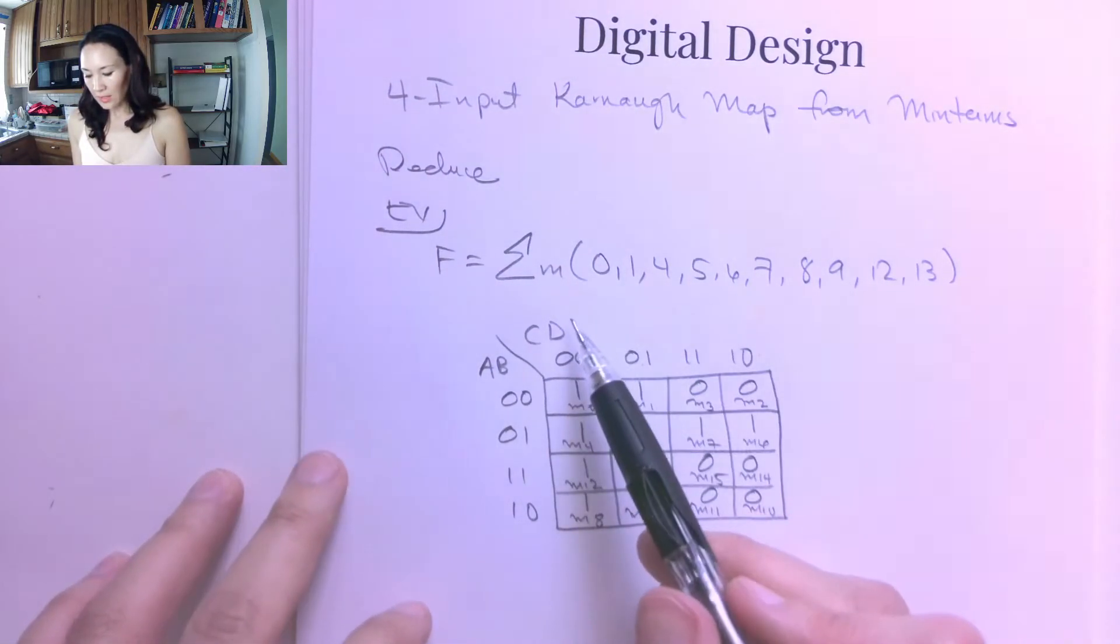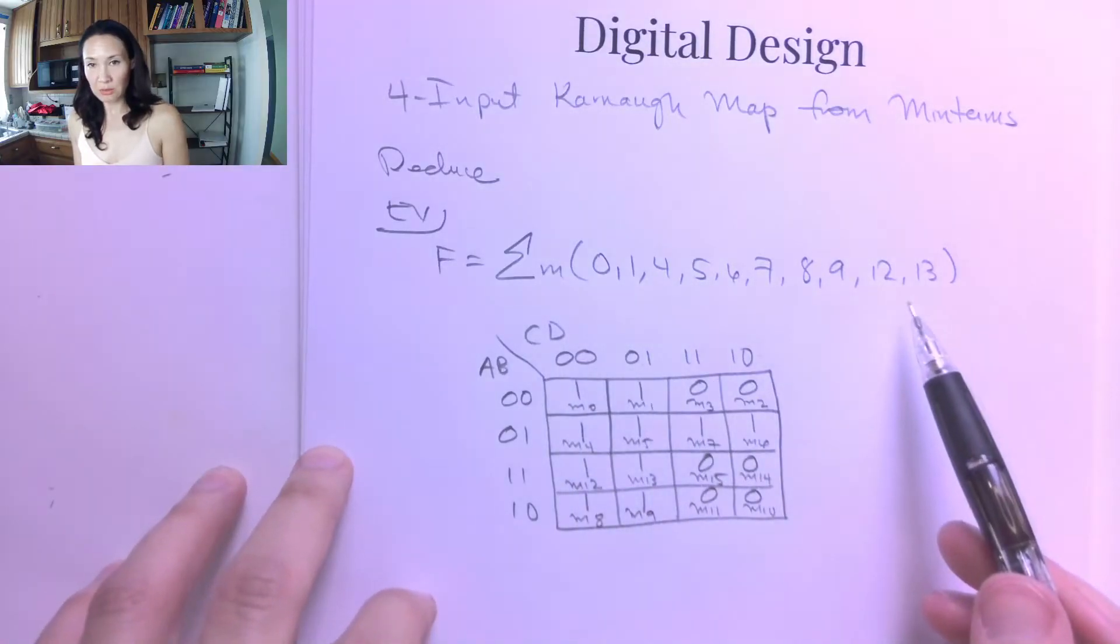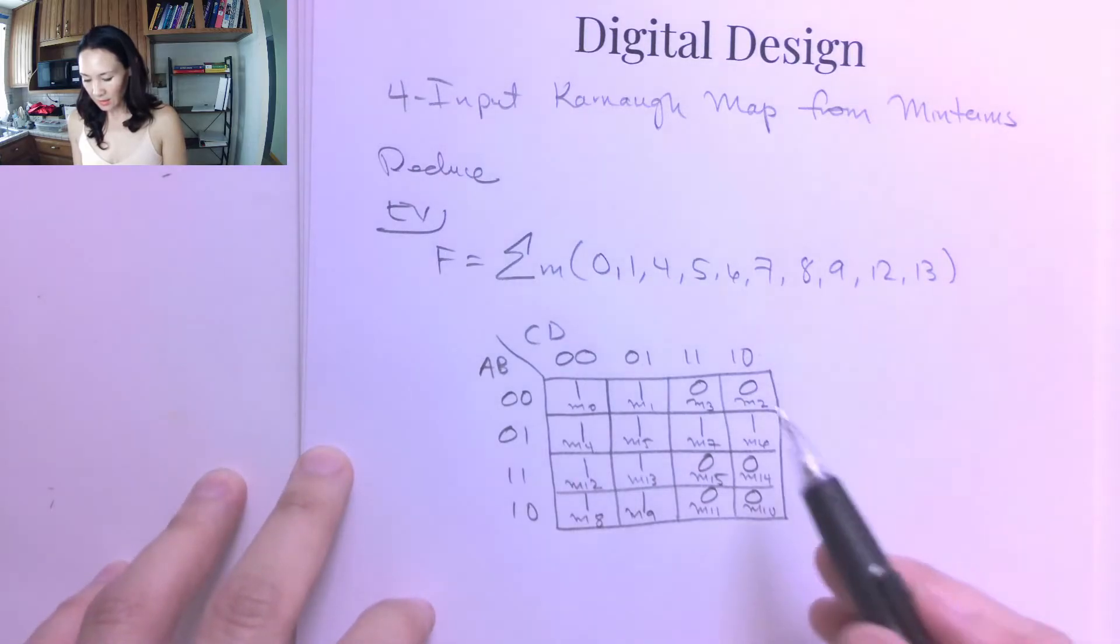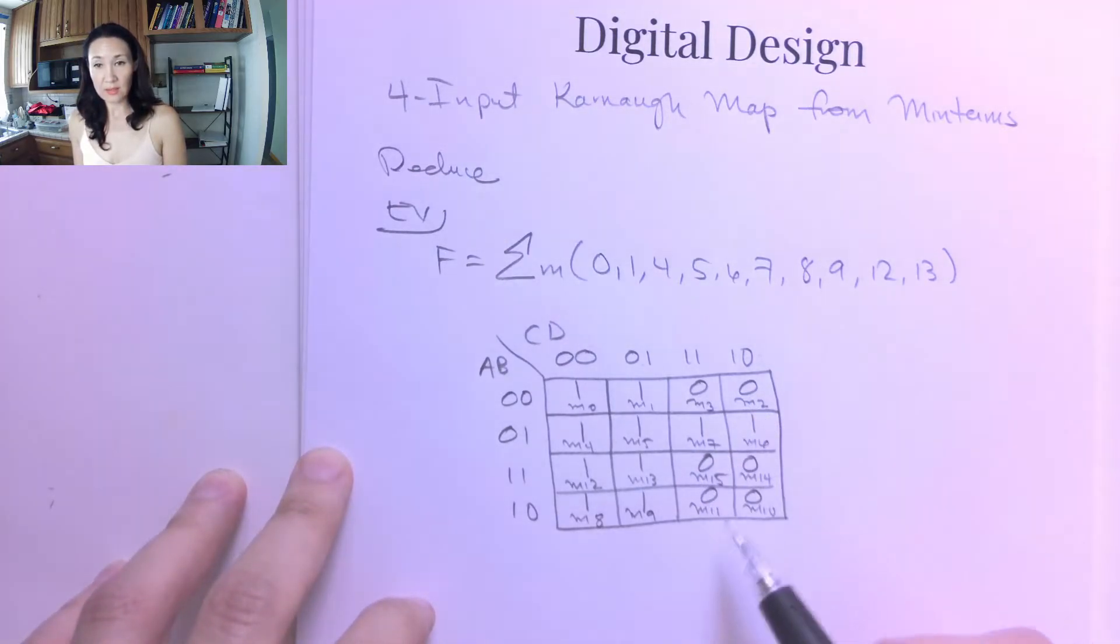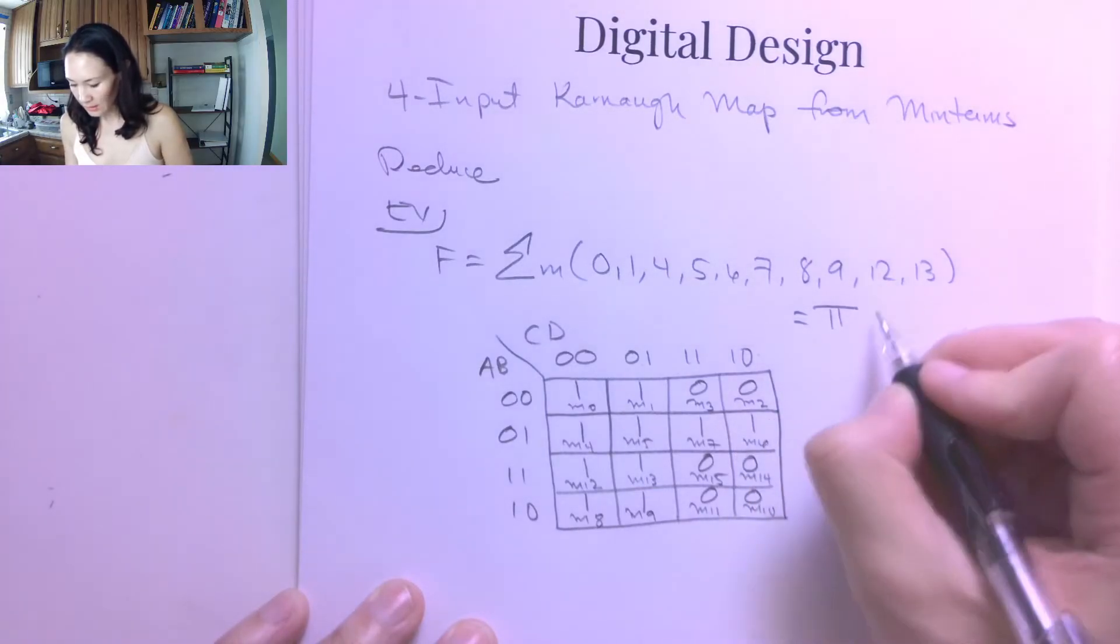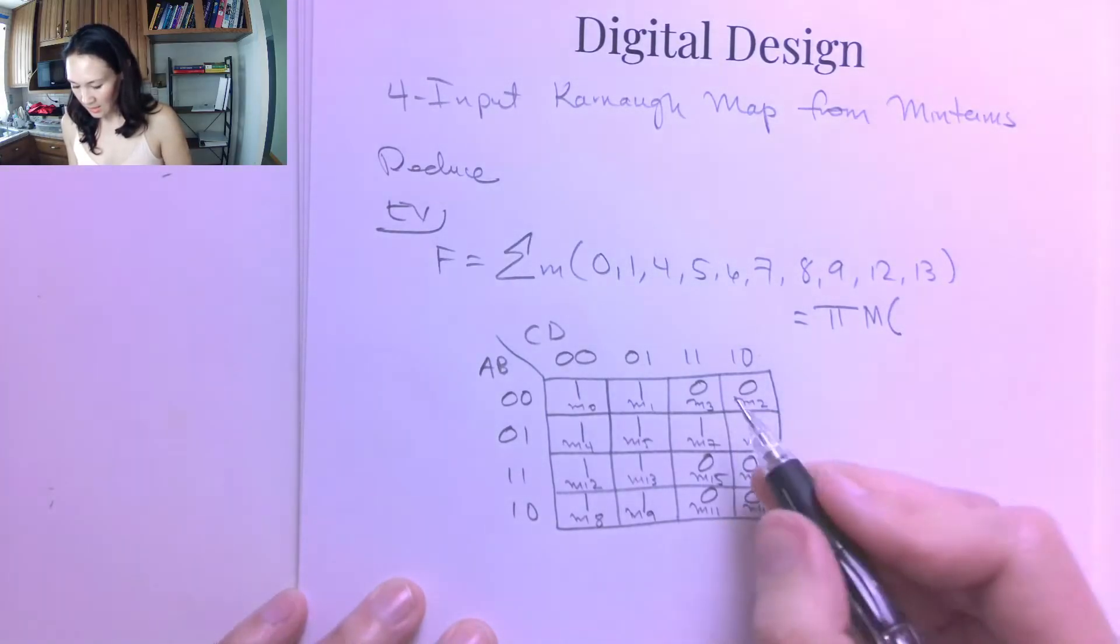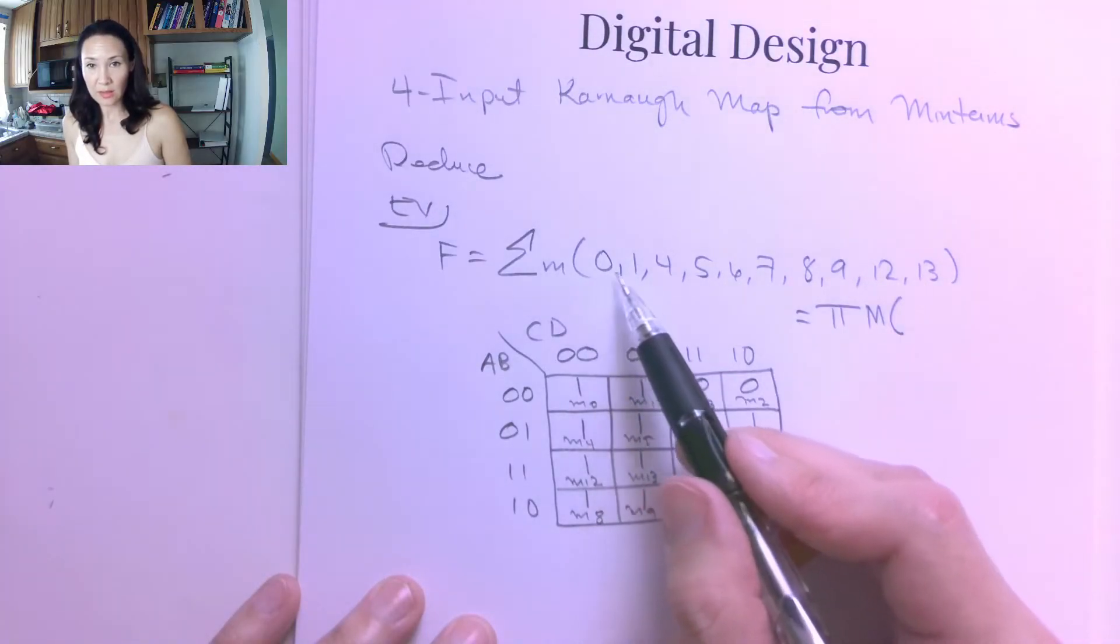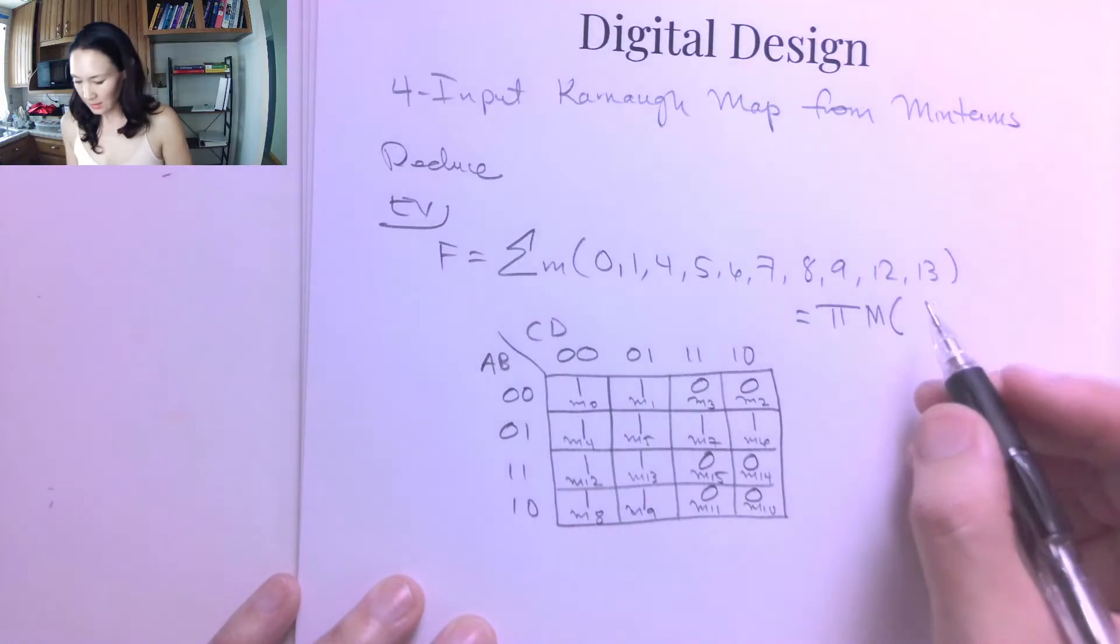So suppose you were given this as not a sum of minterms but a product of max terms. So that list would be basically where all the locations of the 0s are. So this is going to correspond to product of max terms, and that would be whatever number is not in this list. So you could just basically go through and count.